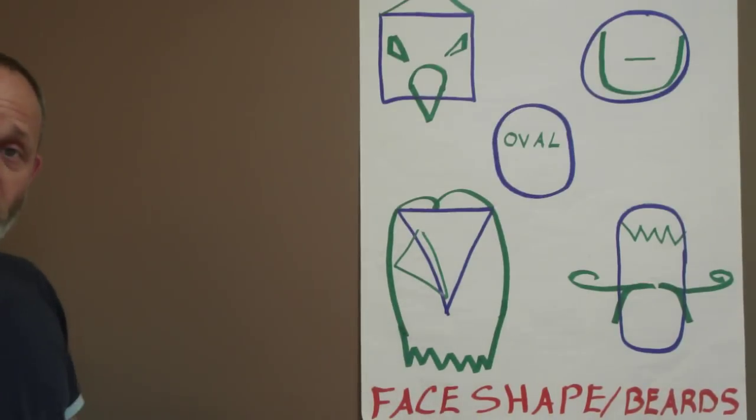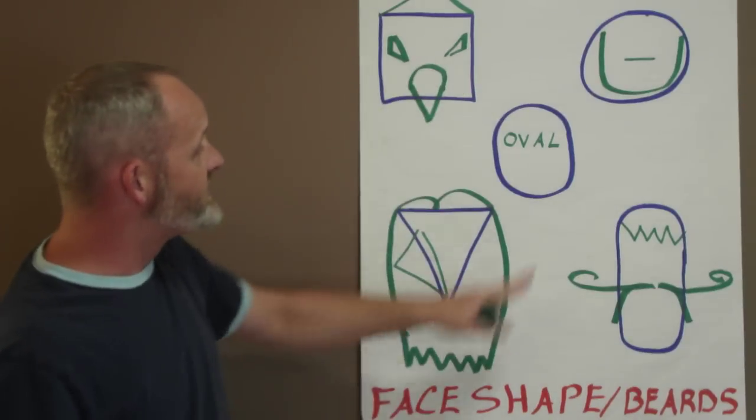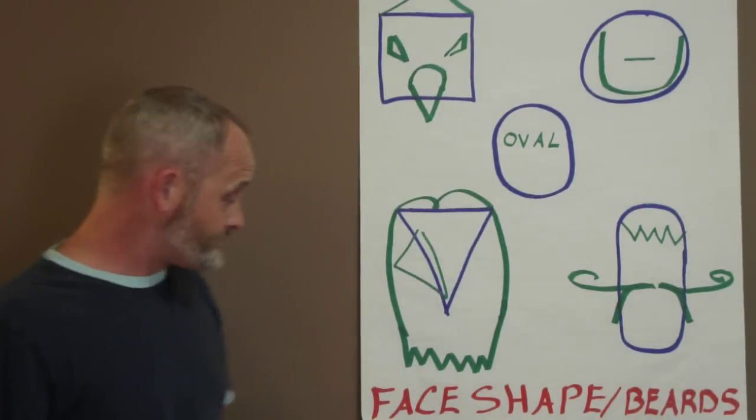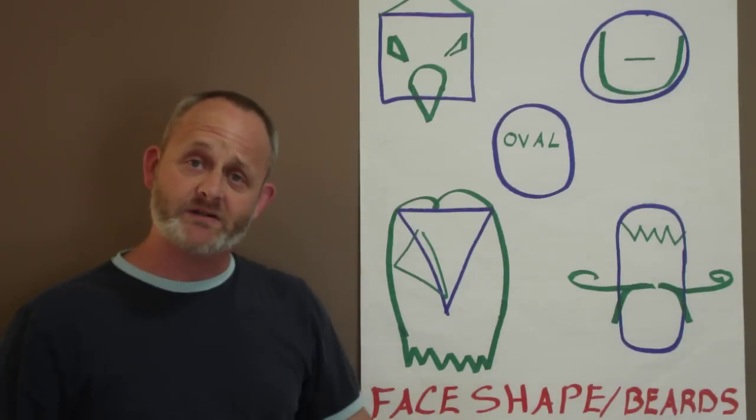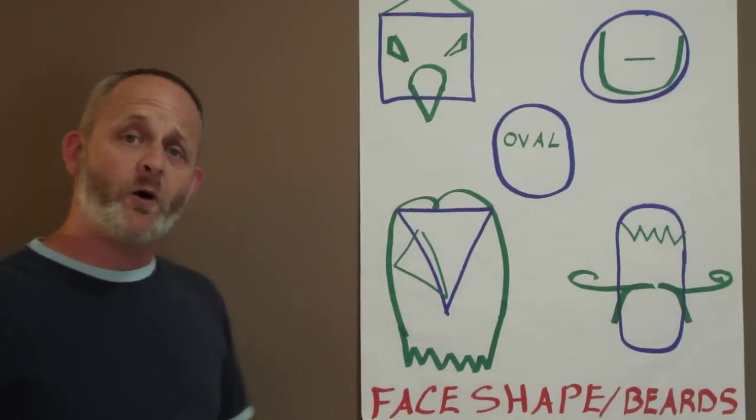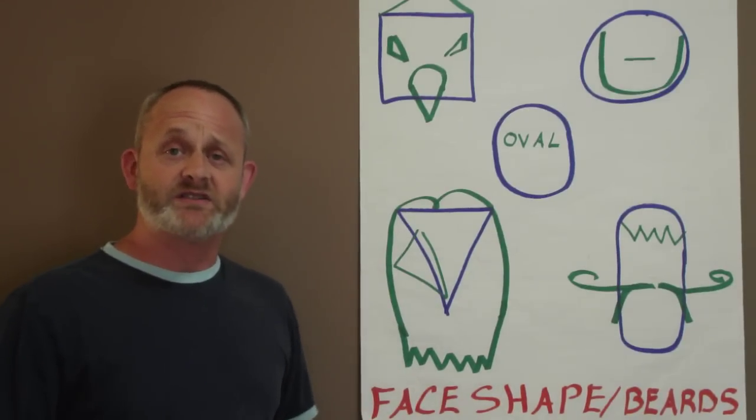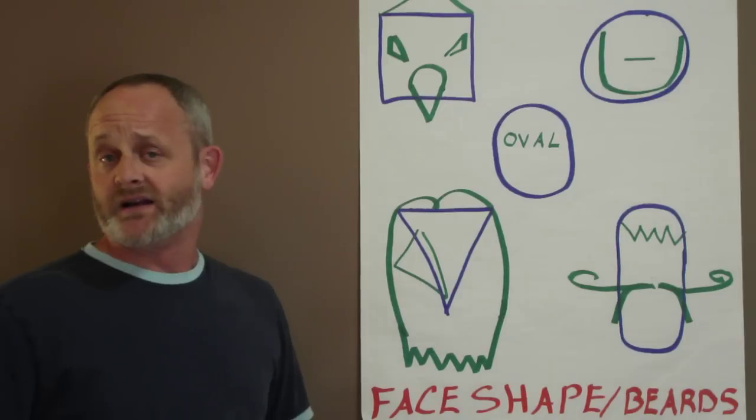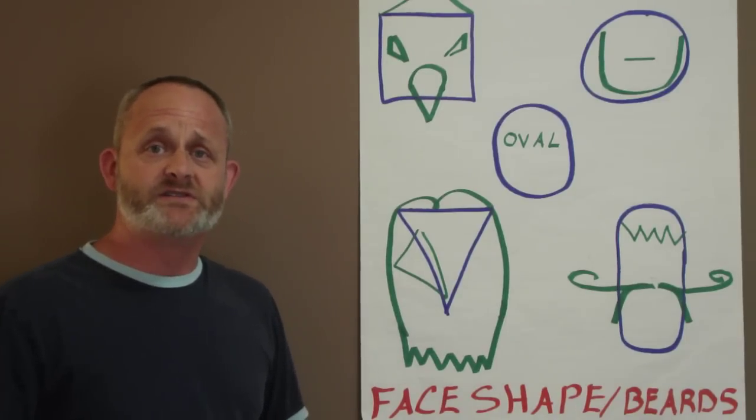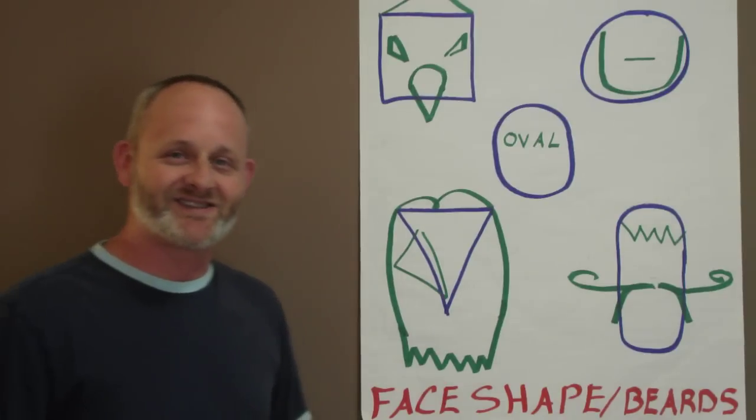So everything is trying to become this oval face shape. We're talking about face shape and beards. My name is Corey Allen. I hope this helps you out a little bit. If I can ever assist you, please call me. My cell number is 918-381-3026, NB Salon.